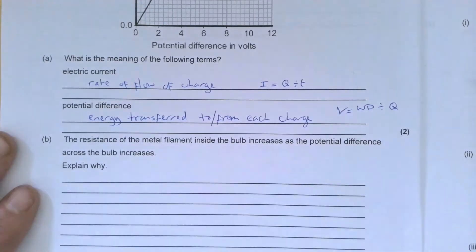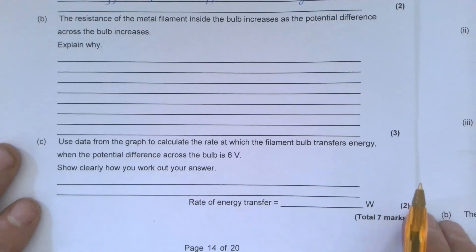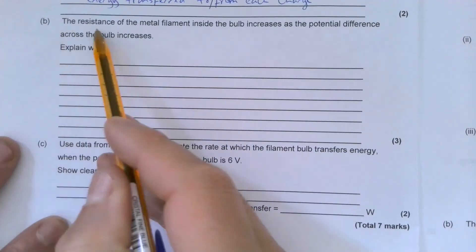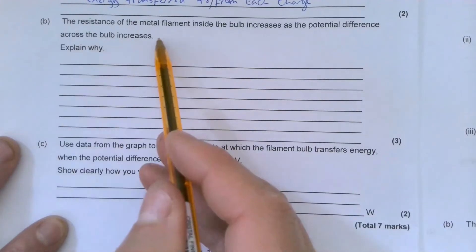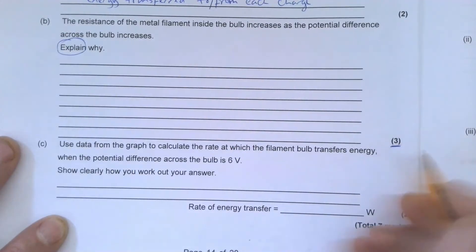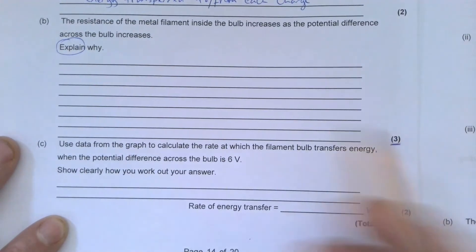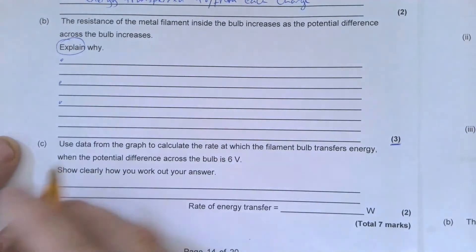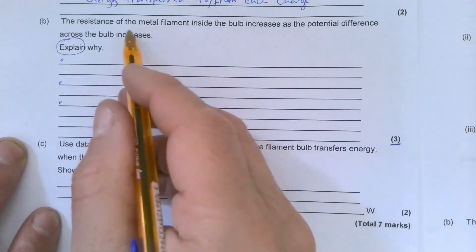Question B: lots of lines here so this could be a slightly more interesting question. The resistance of the metal filament inside the bulb increases as the potential difference across the bulb increases. Explain why. It's an explain question so I need to use science to explain why. We have three marks: one, two, three. So we have three separate statements.